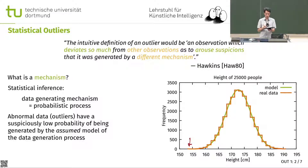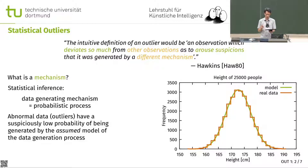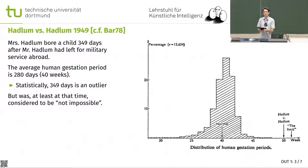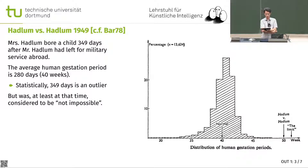Of course, this depends on where the data was collected — that data is probably from military conscriptions, so likely males in the US. Now, here is a classic court case from the US in 1949, Hadlum versus Hadlum. Mrs. Hadlum bore a child 349 days after her husband had left for military service. He claims the child is not his, but his wife claims it is — that it is just unusual.